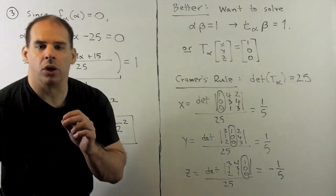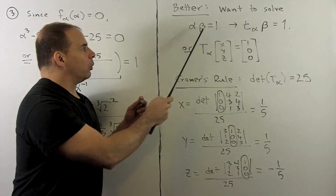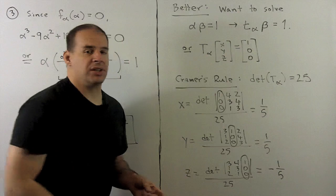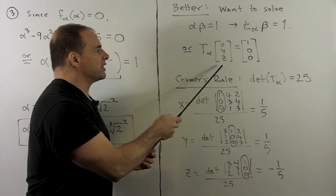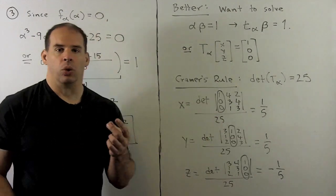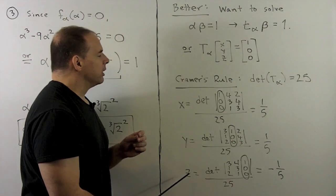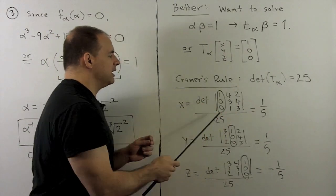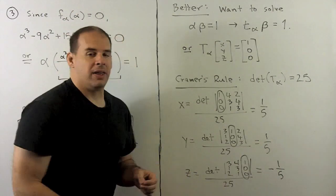Another way to see this: since we're only working with 3 by 3 matrices, we can apply Cramer's rule. We solve for beta in the equation alpha times beta equals 1, or equivalently, T sub alpha applied to beta equals 1. In terms of the basis 1, cube root of 2, cube root of 2 squared, we have matrix T sub alpha times the vector (x, y, z) equals the vector (1, 0, 0), giving a system of linear equations. For Cramer's rule, we first compute the determinant of T sub alpha, which is 25. Then for x, y, and z, we replace the corresponding column of T sub alpha with the image vector, take the determinant, and divide by 25. We get x equals 1 fifth, y equals 1 fifth, z equals minus 1 fifth — agreeing with our answer on the other board.